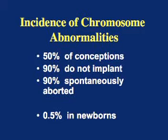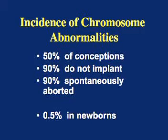These types of errors are believed to occur in 50% of conceptions. However, when these errors happen, 50% of the time the resulting embryo fails to implant in the uterus — too early to even become a recognized pregnancy. Of those abnormal embryos that do implant, 90% of those embryos are miscarried, usually in the first trimester.